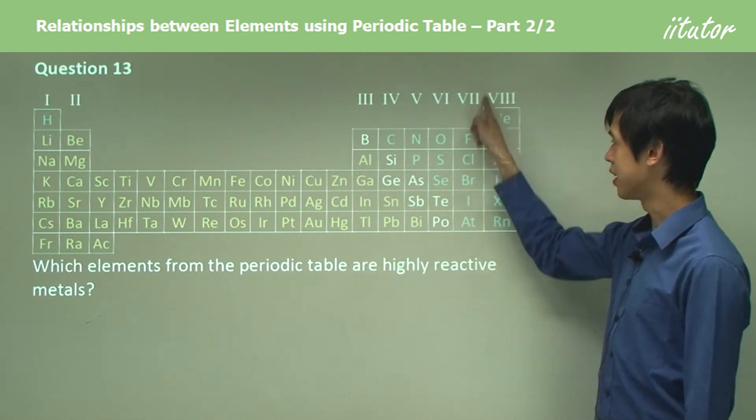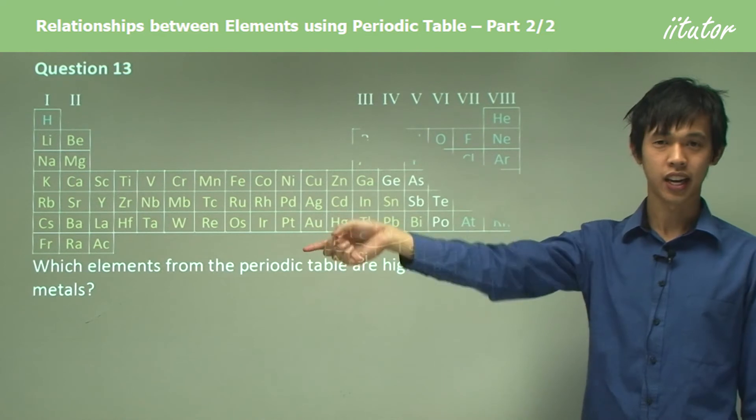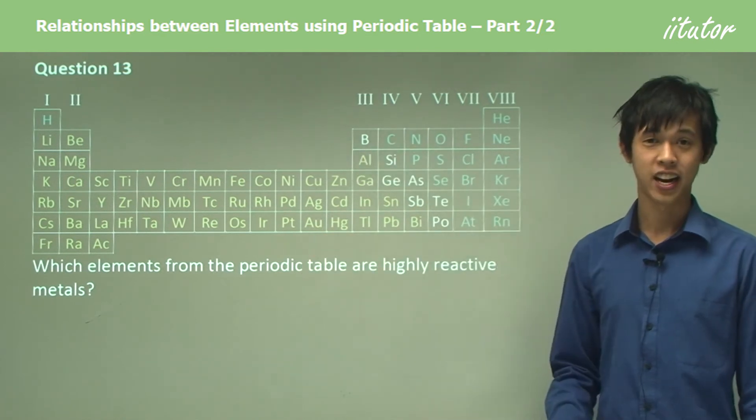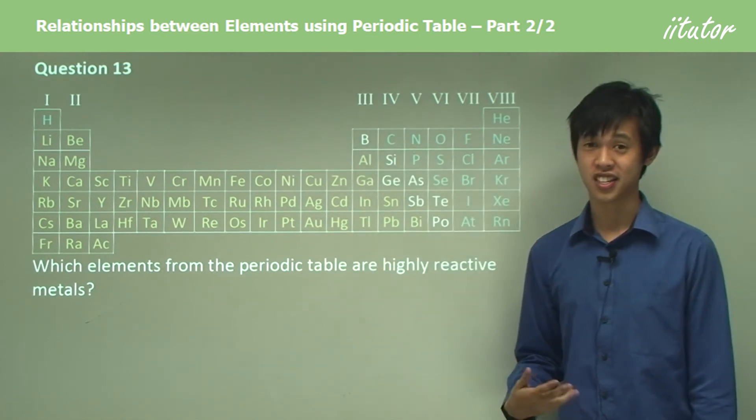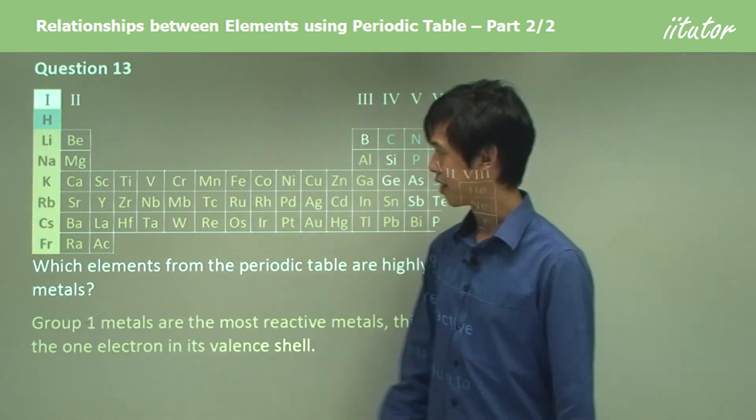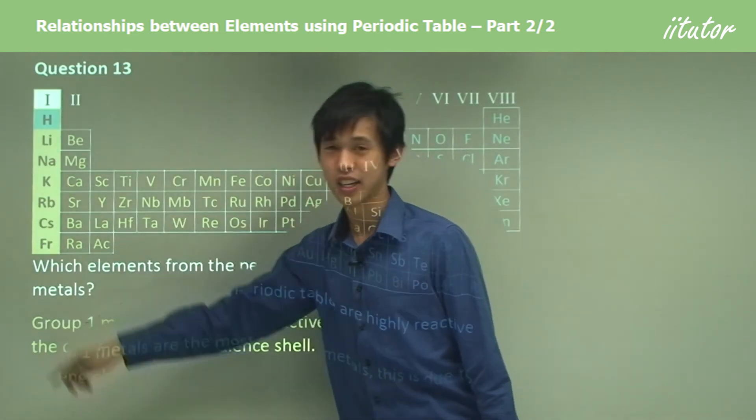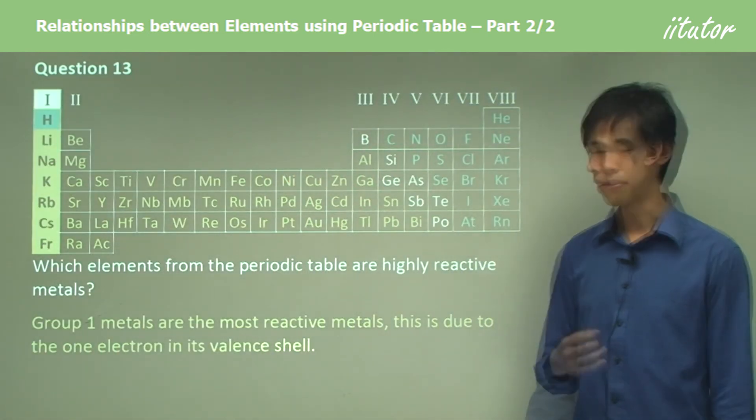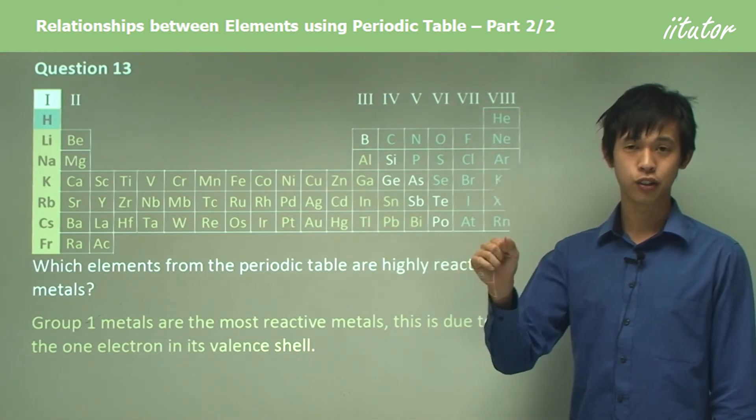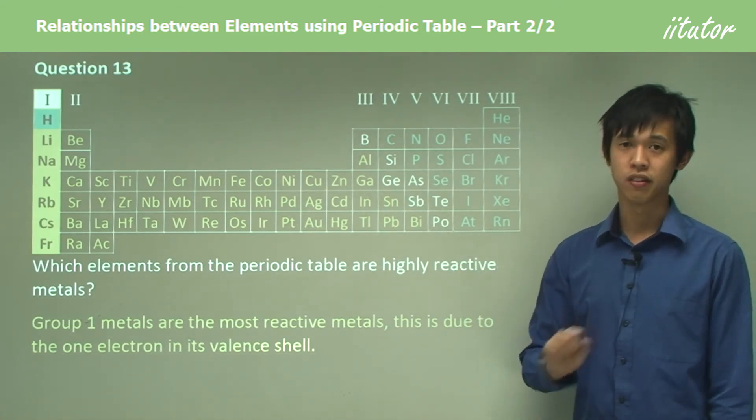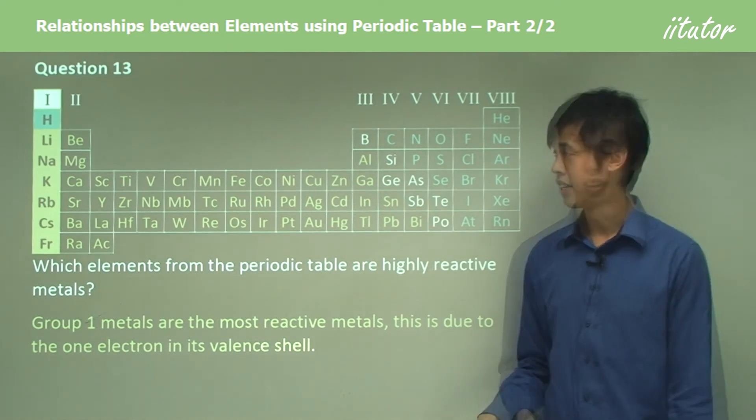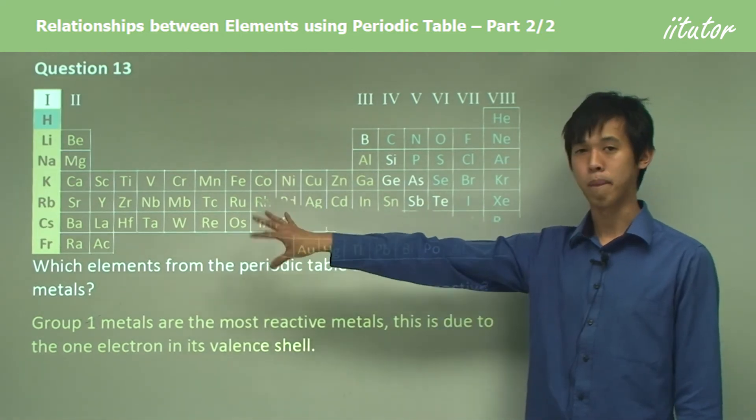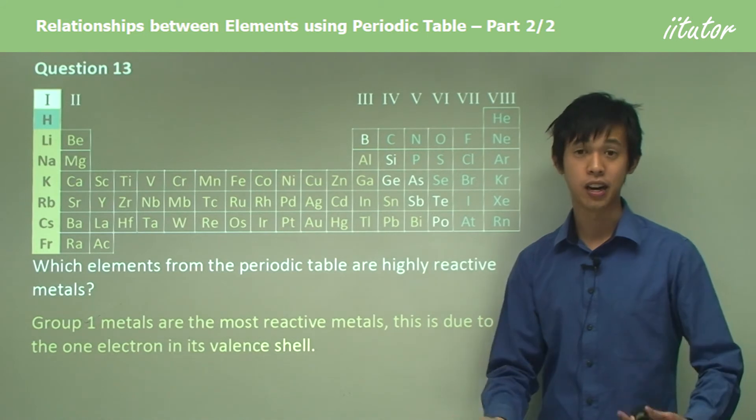If I was a betting man, I would say that if these are the very stable ones, if I go to the opposite end I'll find the very reactive ones. That kind of logic is actually correct because Group 1 is the most reactive metal compounds. This is due to the fact that they only have one electron in their outer shell, and so they really just want to get rid of it and react with something. That makes them very reactive.